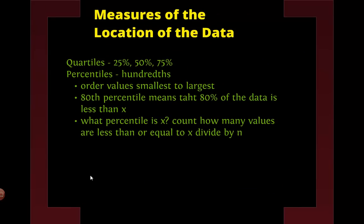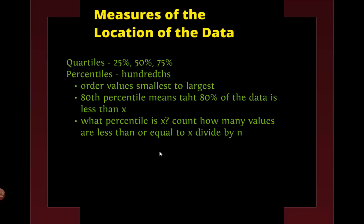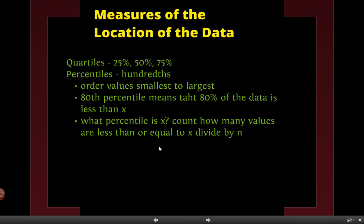Now we'll talk about location. We just mentioned quartiles in the box plots — there are really three of them: the 25th percentile, the 50th percentile, and the 75th percentile, because they divide the data into quarters. We don't have to stop at quartiles; we can break it into hundredths, giving us percentiles like the 80th, 20th, or 36th percentile.